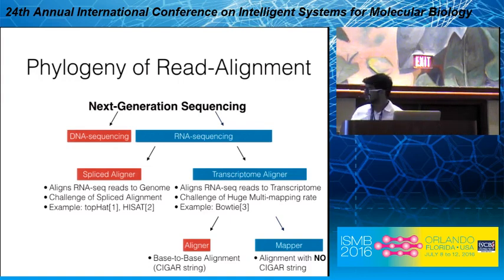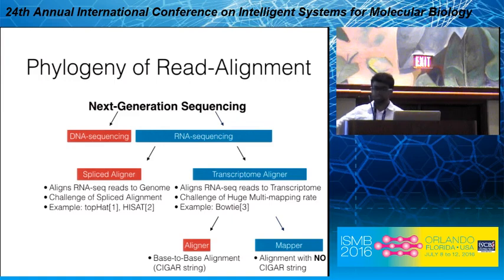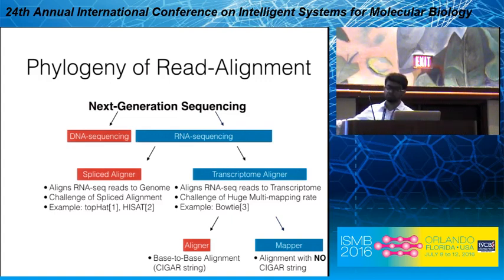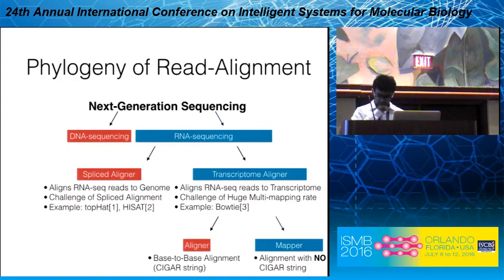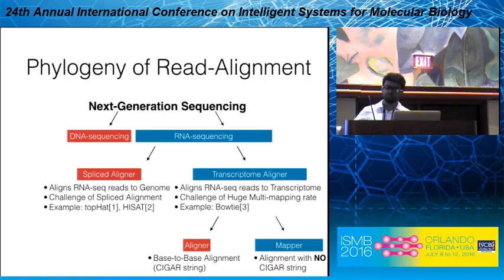In transcriptome alignment, we have two major divisions — this is important because the community uses these words interchangeably. We have read aligners, which find nucleotide-to-nucleotide correspondence between a read and the reference. Then we have read mappers, which are like aligners but with no CIGAR strings. CIGAR strings, as in the SAM/BAM format, represent nucleotide-to-nucleotide correspondence as a compact string — read mappers don't worry about that.